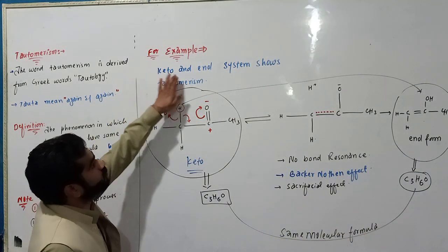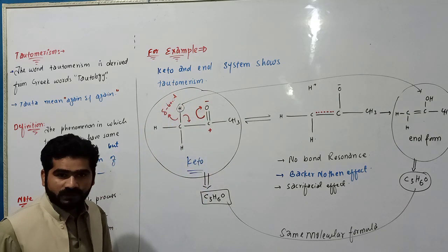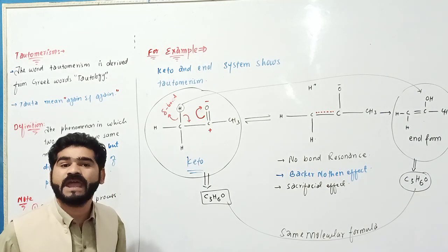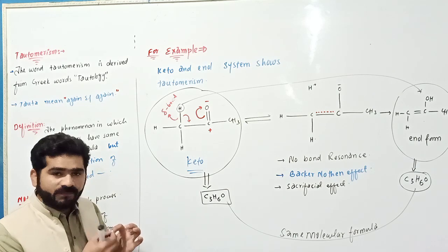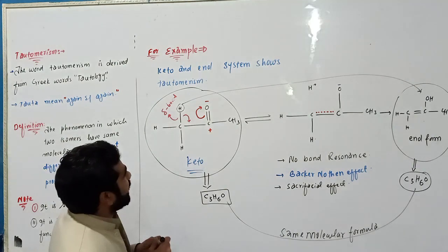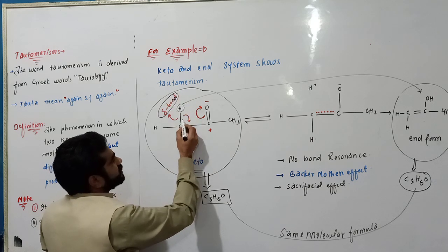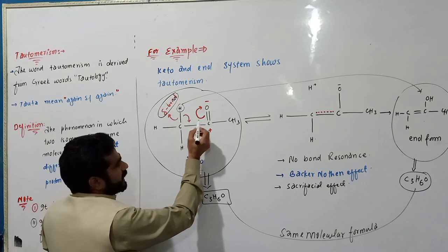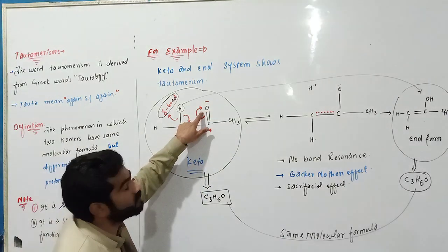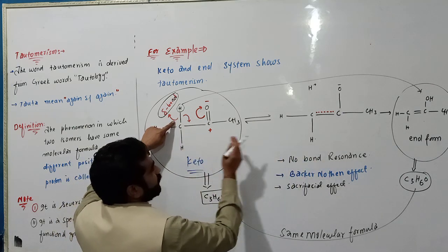It is a special type of functional group isomerism. For example, keto-enol system shows tautomerism. It is ketone, and also enol. If anyone switches from this place, there is a sigma bond which comes and goes. This is a sigma bond.